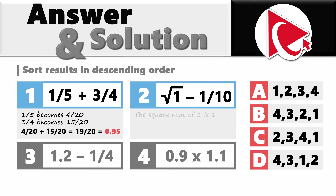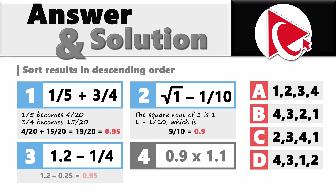In the second expression, the square root of 1 is 1. 1 minus 1/10 equals 9/10, which equals 0.9. The third expression can be calculated as 1.2 minus 0.25, and the end result of this would be 0.95. The result of multiplication in the fourth expression equals 0.99.